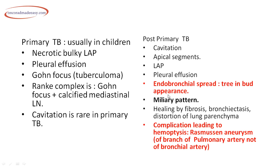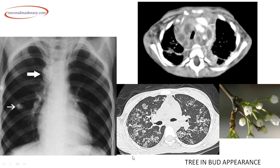Endobronchial spread gives the tree-in-bud appearance. Another pattern is miliary TB. Healing in post-primary TB is by fibrosis, bronchiectasis, or distortion of lung parenchyma. A complete complication seen in post-primary TB is hemoptysis due to Rasmussen aneurysm, which is a branch of the pulmonary artery — not the bronchial artery.